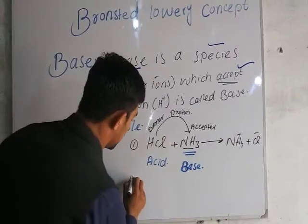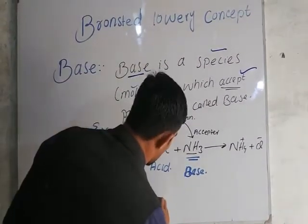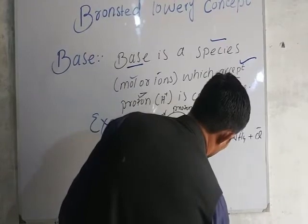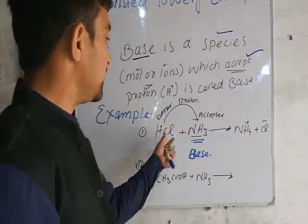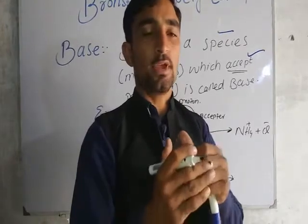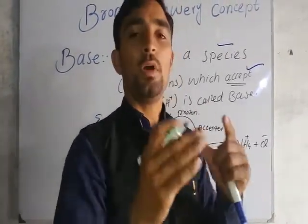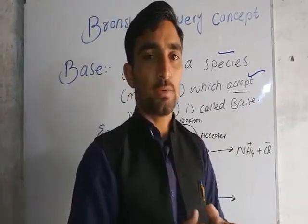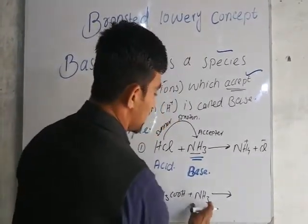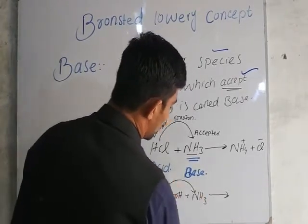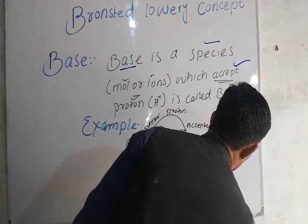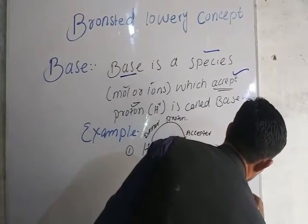The second example is carboxylic acid. When carboxylic acid reacts with ammonia, carboxylic acid donates a proton and ammonia accepts this proton. Products are NH4 plus, CH3, COO minus.